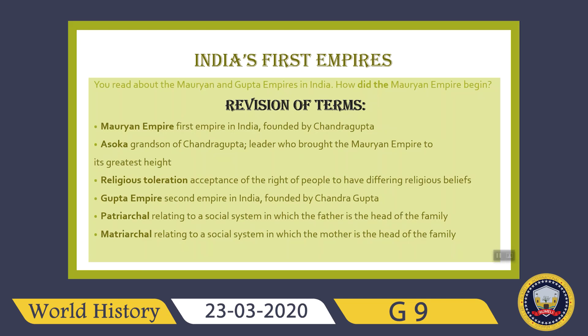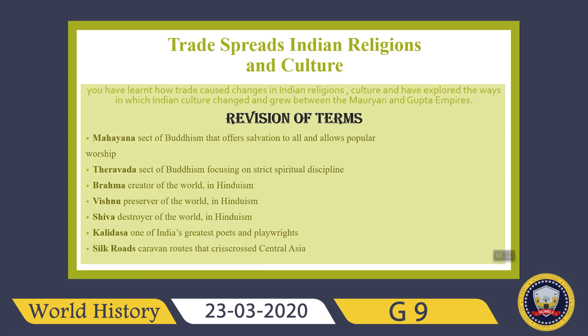Religious toleration means acceptance of the right of people to have differing religious beliefs. The Gupta Empire is the second empire in India, also founded by Chandragupta. Patriarchal refers to a social system in which the father is the head of the family, and matriarchal refers to a social system in which the mother is the head of the family.